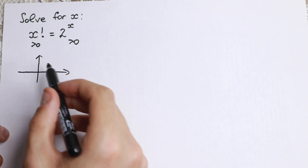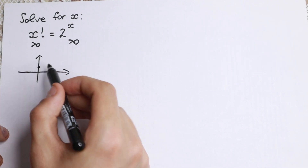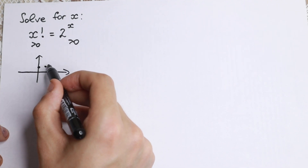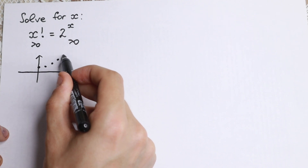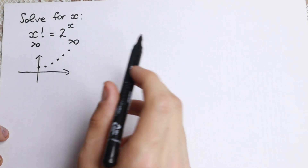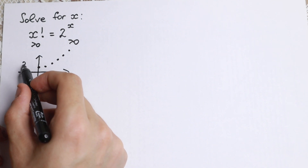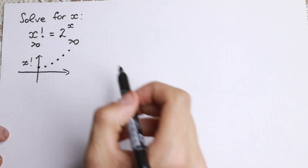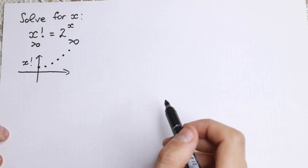So you'll know that the graph of x factorial looks like this — at 0 we get 1. This factorial function grows to infinity, as you can see. This is our x factorial.